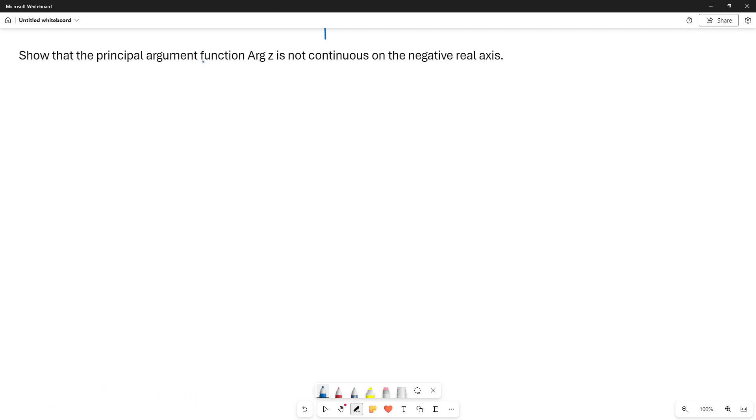We will show that the principal argument function, Arg z with a capital A, is not continuous on the negative real axis.